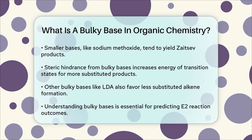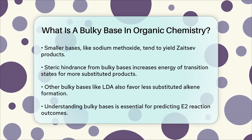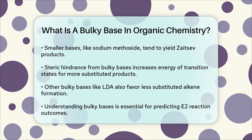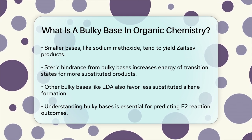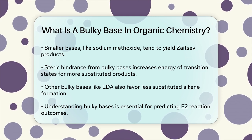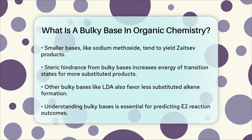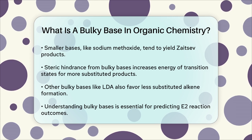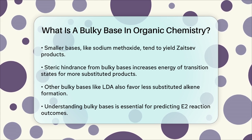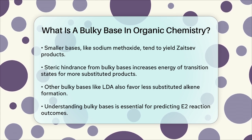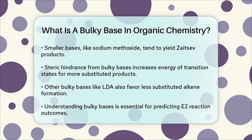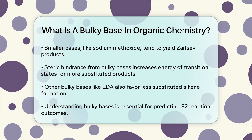In summary, a bulky base in organic chemistry is a base with a large, sterically hindered structure that influences the outcome of E2 elimination reactions by favoring the formation of less substituted alkenes due to steric interactions. Understanding this concept is key to predicting and controlling the products of these reactions.